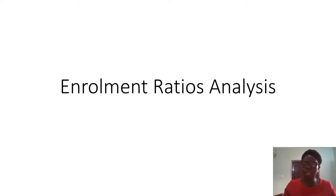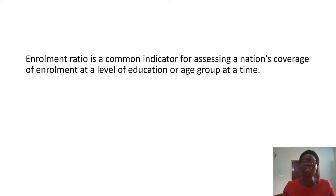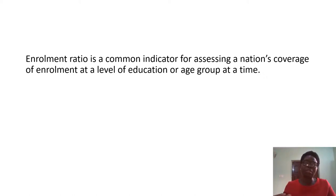Let's look at enrollment ratio. Enrollment ratio is a common indicator for assessing a nation's coverage of enrollment at a level of educational age group at a time. We use enrollment ratio to know the total number of the population that are enrolled in school and the age group that are in school.